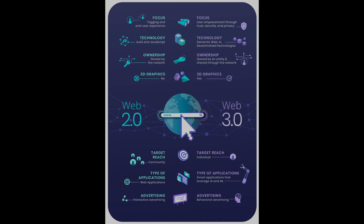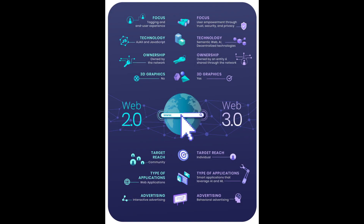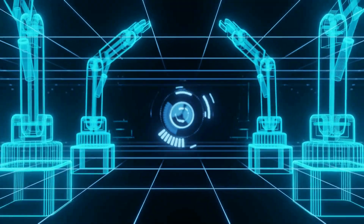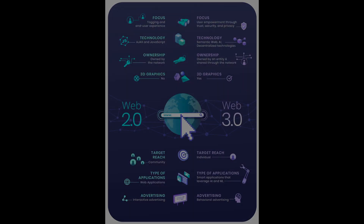Let's go a little deeper and compare and contrast Web 2.0 and 3.0 to crystallize where we're headed. In terms of focus, Web 2.0 was looking at tagging end-user experience, while the focus in 3.0 is empowering through trust, security, and privacy. With Web 2.0, the technology was HTML, Ajax, and JavaScript. In Web 3.0, the technology will be semantic web, AI technologies, and decentralized technologies. Ownership resided in the networks in 2.0, whereas ownership in 3.0 should hopefully reside in the end-user and not be tied to one specific network.